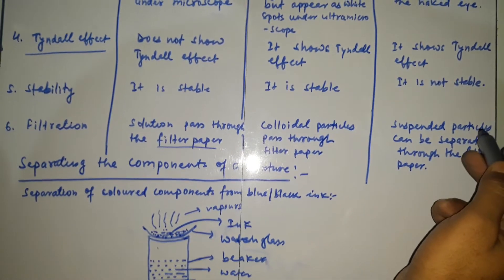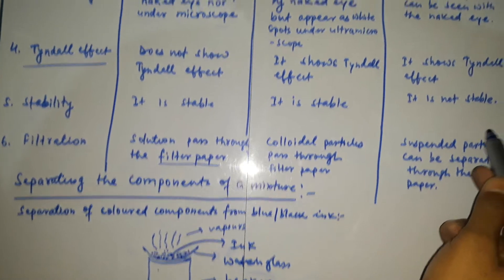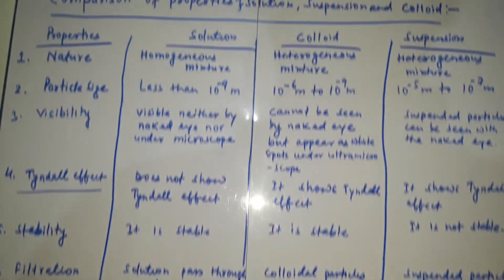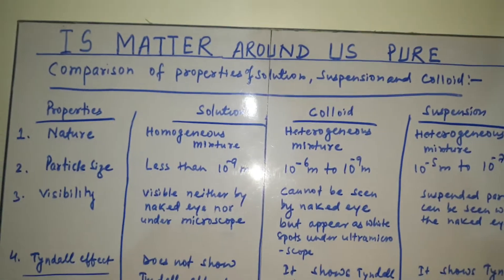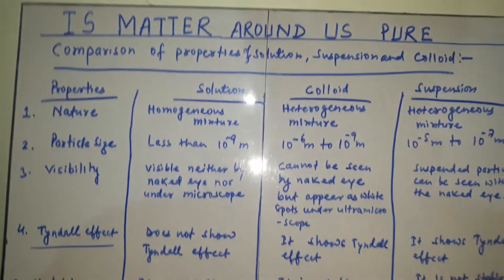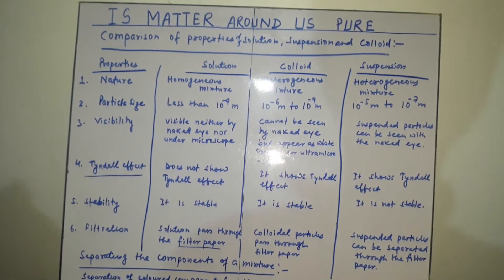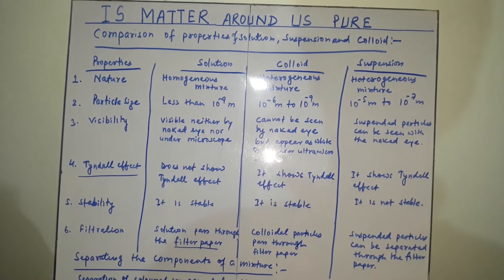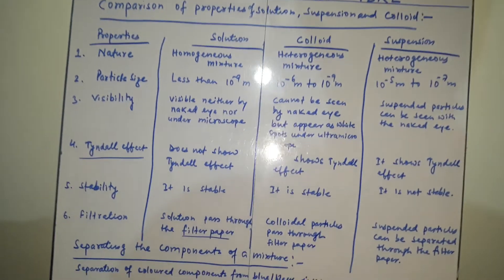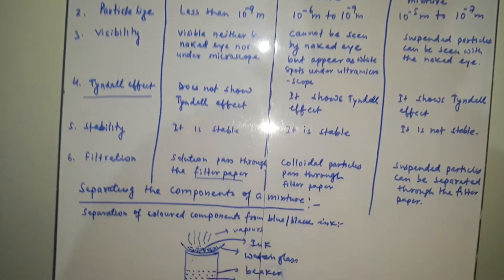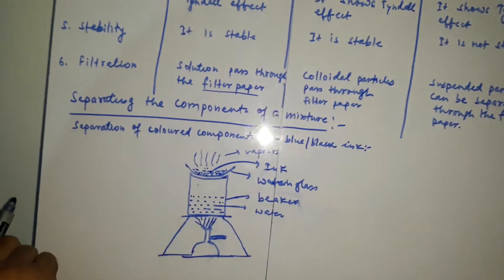So this is all about the comparison. We have compared six properties: nature, particle size, visibility, Tyndall effect, stability, and filtration. Now we will talk about one method of separation of mixture.